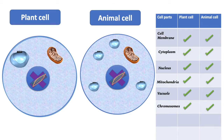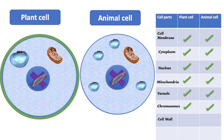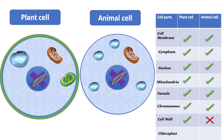This is the cell wall. It is a thick protective covering around the plant cell. Only the plant cell has it, and the animal cell doesn't. This is called the chloroplast. It helps the plant make food through photosynthesis and helps the plant stay green. Only the plant cell has it, and the animal cell does not.